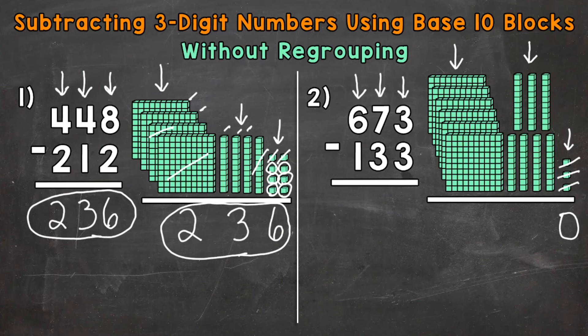Let's move to the tens. We have 7 tens minus 3 tens, so let's take away 3 tens: 1, 2, 3. How many do we have left? It looks like we have 1, 2, 3, and 4. So let's put a 4 in the tens place in our answer.